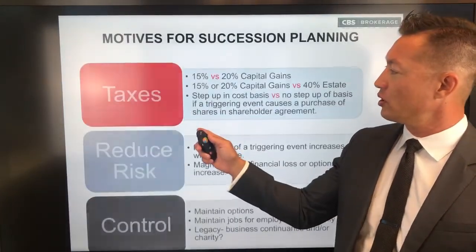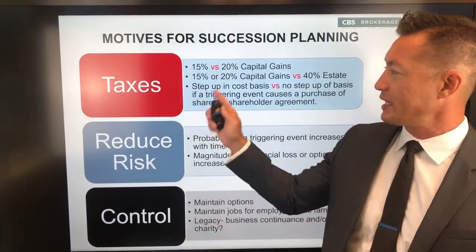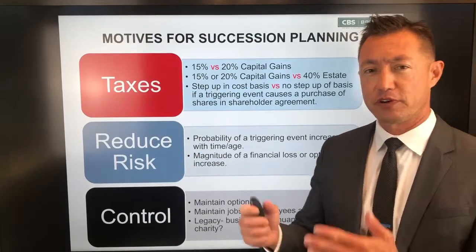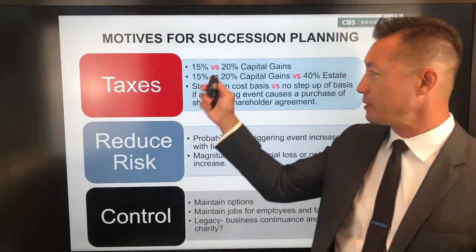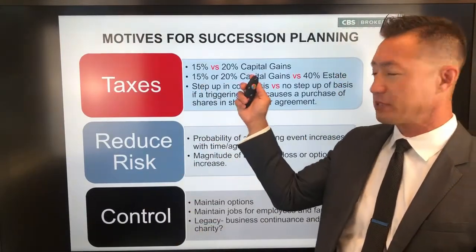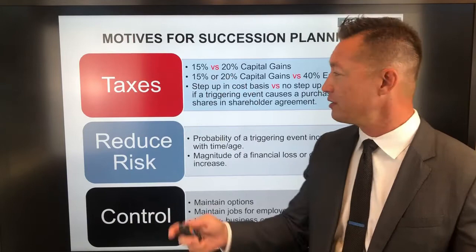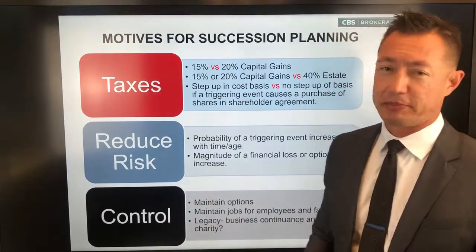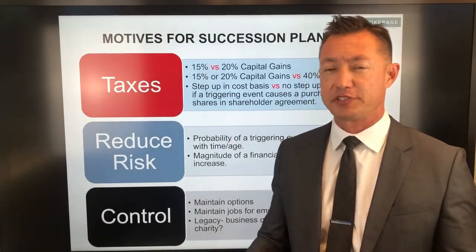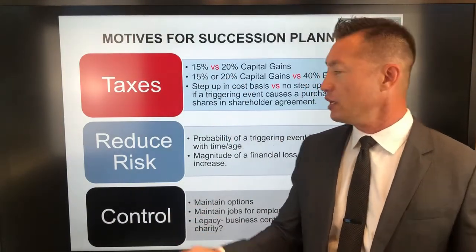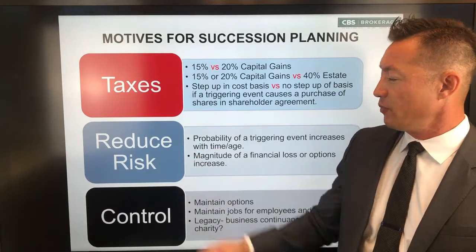There are three reasons we're going to focus on taxes. First of all, for business owners to exit during lifetime, we might be able to get them from the 20% capital gains rate to 15% if they're going to sell. We also might be able to get a step-up in basis in ways that were not previously possible on their existing buy-sell arrangements.